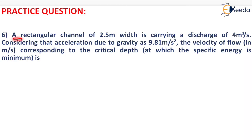The question is: A rectangular channel of 2.5 meter width is carrying a discharge of 4 meter cube per second. Considering that acceleration due to gravity is 9.81 meter per second square, the velocity of flow in meter per second corresponding to the critical depth at which the specific energy is minimum is: